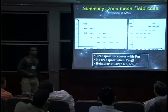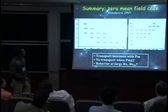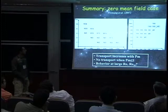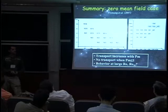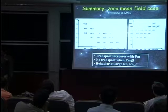Here is a summary, previously shown by Geoffroy, of where we are now in the zero net flux case in the Re-PM plane. We see an increase of alpha with PM. It's not clear what happens when you go to large Re so far. At each Reynolds number there is a critical Prandtl number below which turbulence dies away, and this critical Prandtl number seems to decrease with Reynolds number.